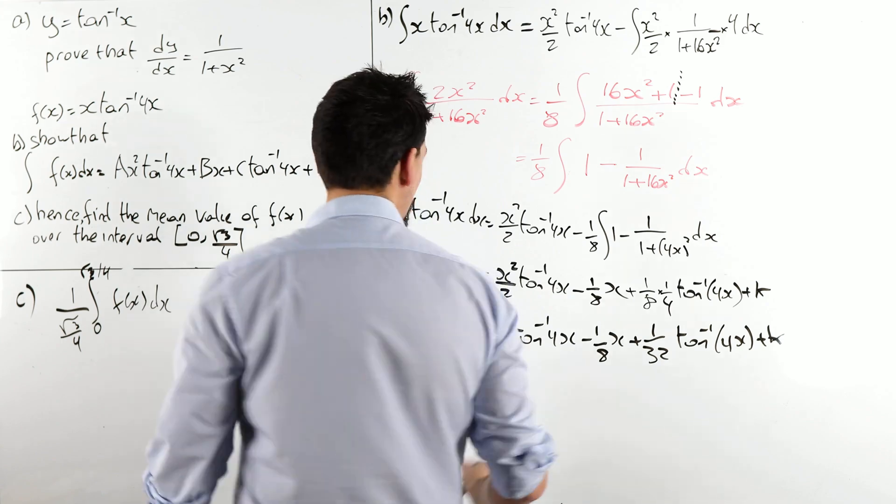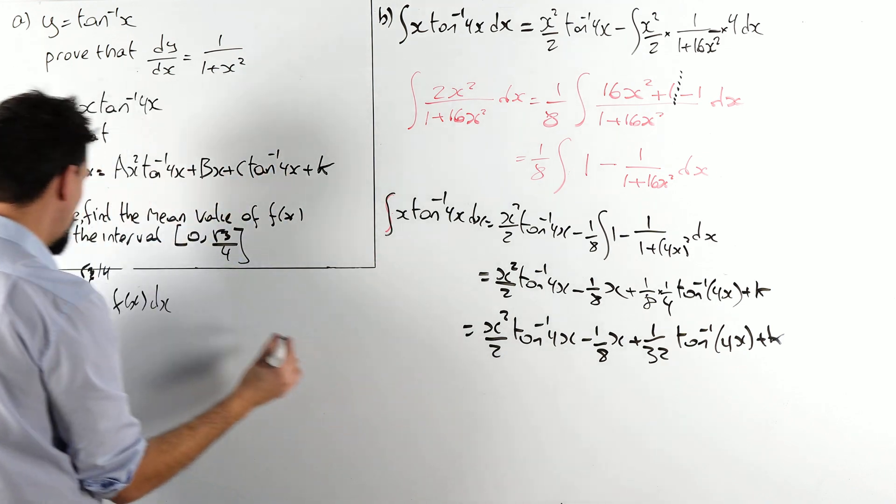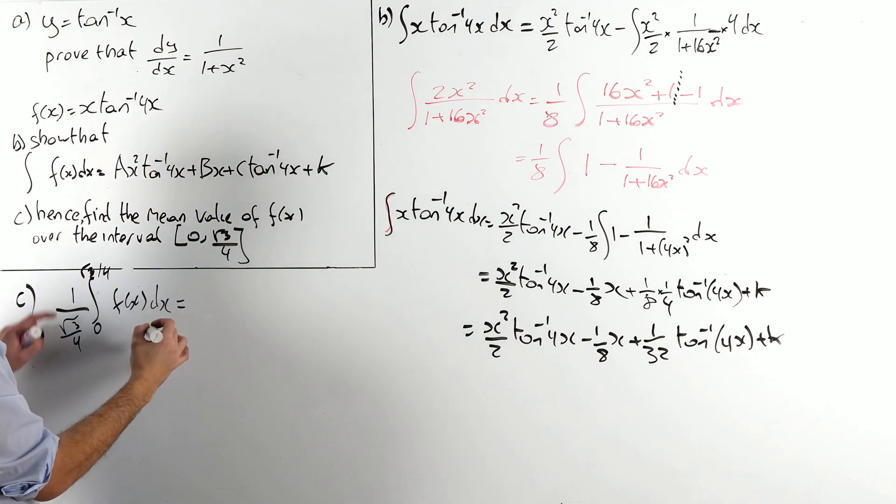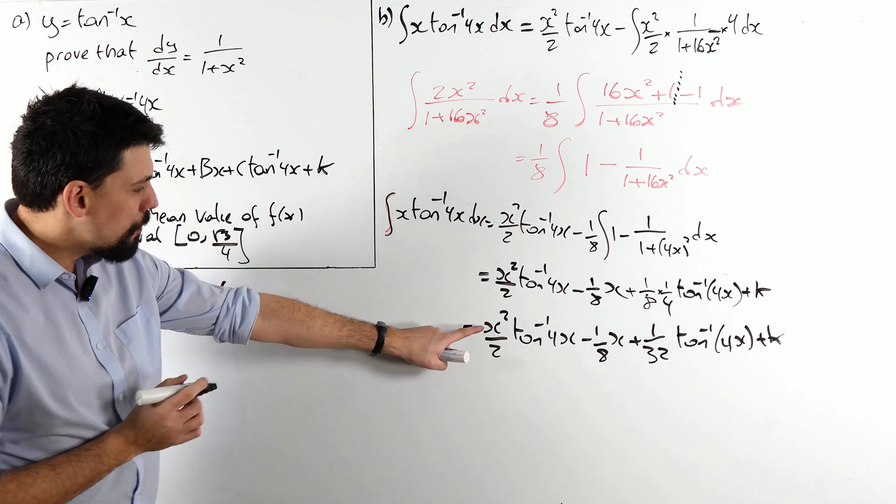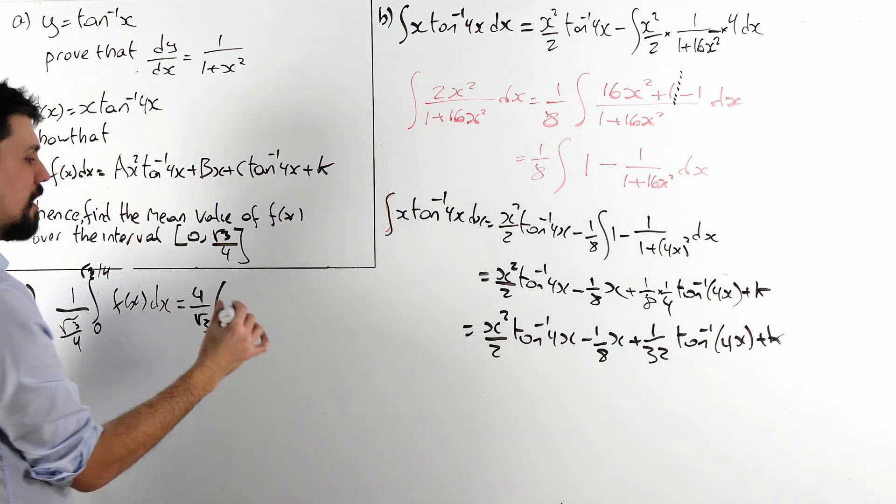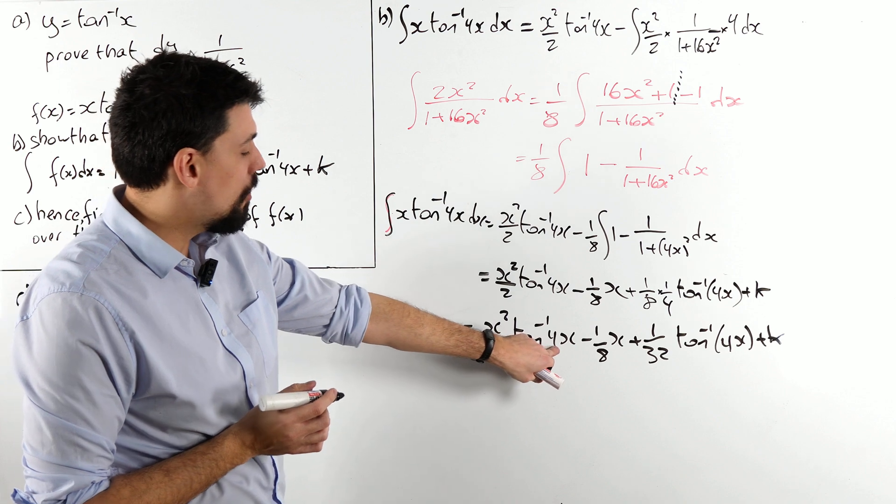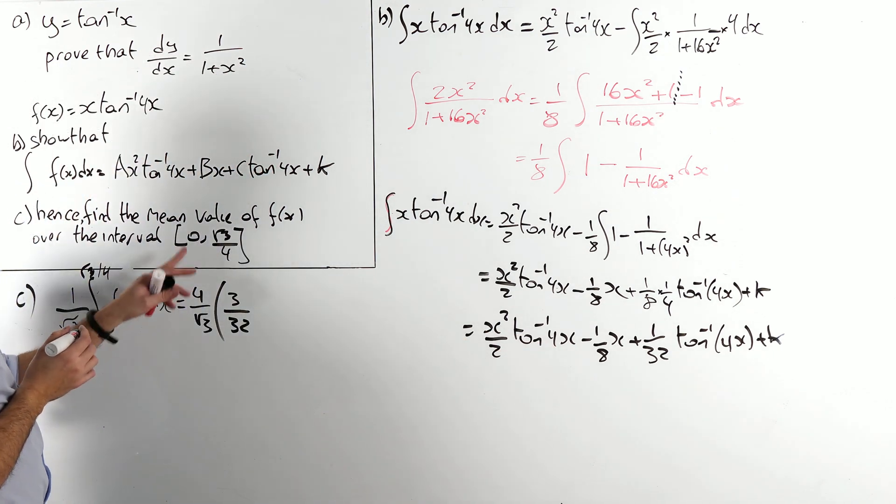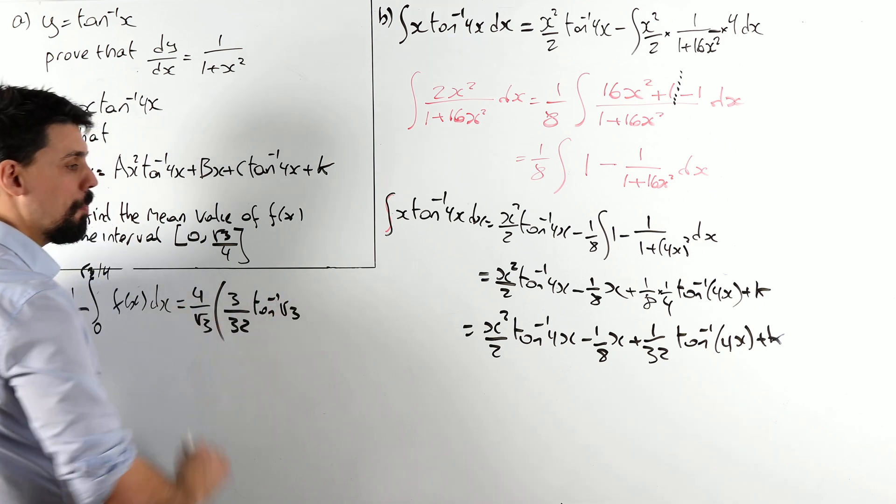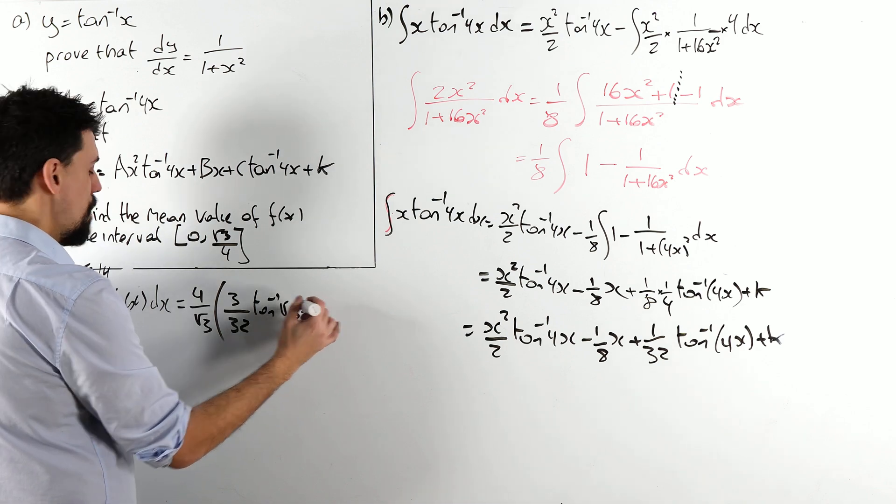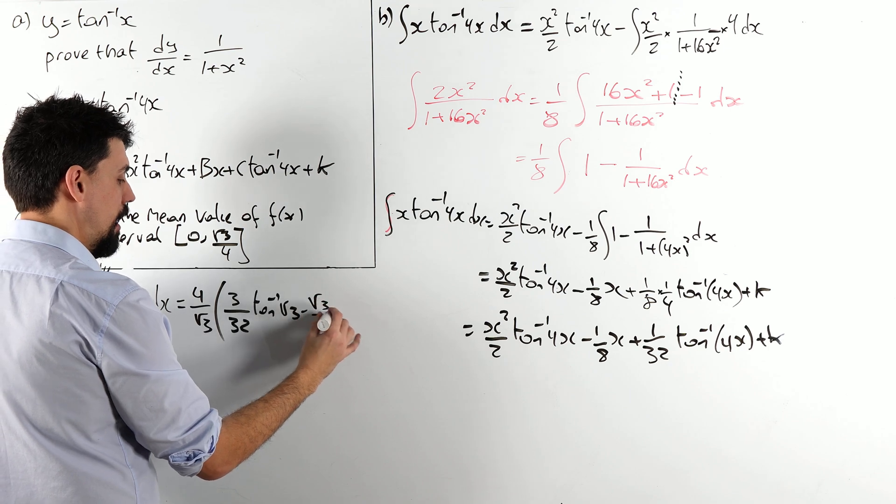I've got a fraction within a fraction, I've got a third in a denominator, we will clear it up, I promise to you. But first, I want to deal with the horrible bit, which is plugging root 3 over 4 and 0 into this. I've already done the integral. 1 over root 3 over 4 is 4 over root 3. Root 3 over 4 squared is, of course, 3 over 16, so I get 3 over 32 inverse tan of root 3 minus 1 eighth of root 3 over 4, which is root 3 over 32.